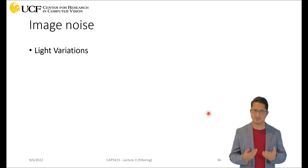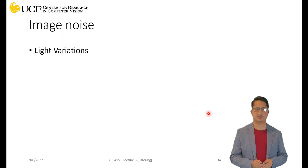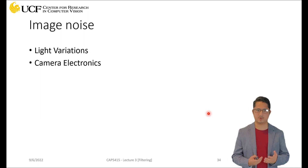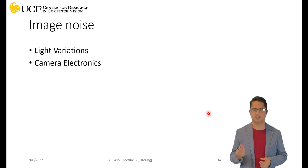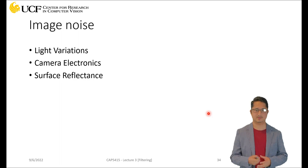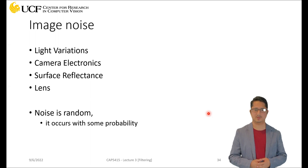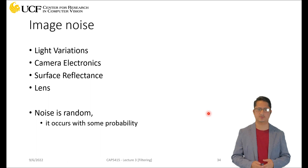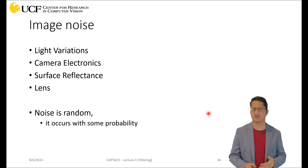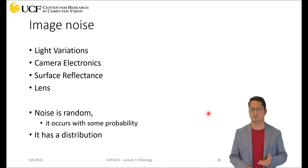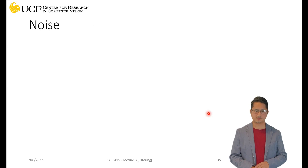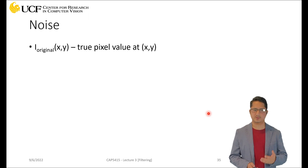Now let's talk about what image noise is. There are a lot of reasons we see noise in images: light variations, camera electronics, faults in the hardware used to take the photograph, sensor or lens issues, non-uniform surface reflectance, or dirt on the lens. Noise is random, and one important property is that it occurs with some probability — it won't occur all the time. Because noise has some probability associated with it, it will follow some kind of distribution.